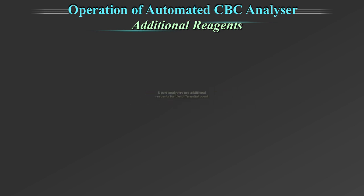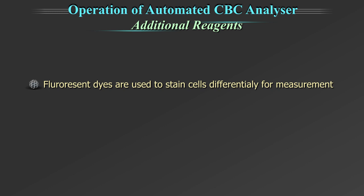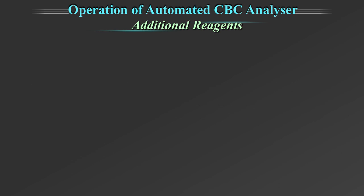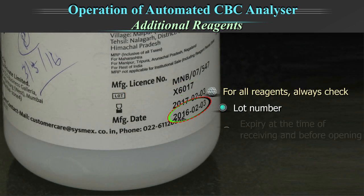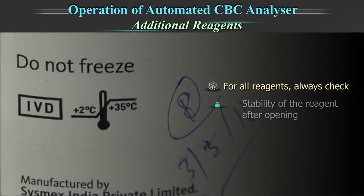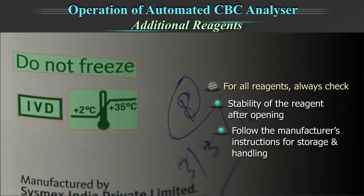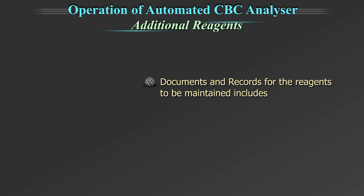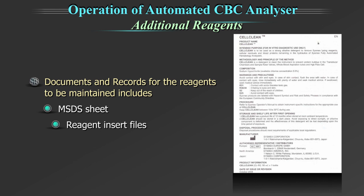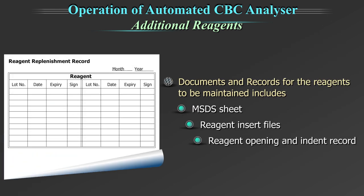In addition, 5-part analysers use additional reagents for the differential count. In some 5-part analysers, fluorescent dyes are used to stain cells differentially for measurement. In others, reagents stabilize cells for identification without fluorescent dye, as in volume conductivity scatter (VCS) technology. For all reagents, always check the lot number and expiry at the time of receiving and before opening. Note the stability of the reagent after opening. Documents and records should be maintained, including relevant MSDS sheets, reagent insert files, reagent opening records and indent records.